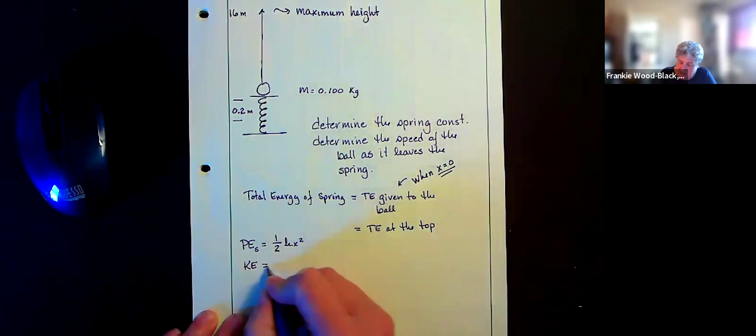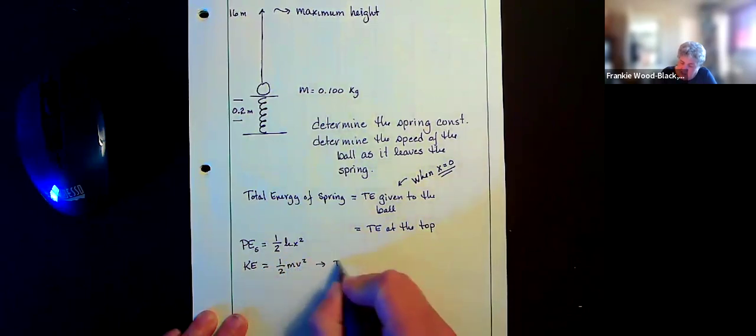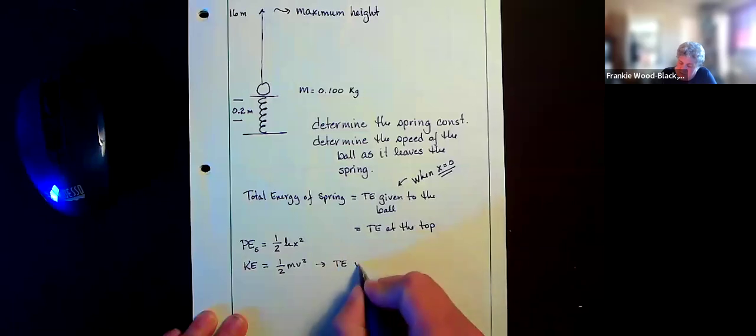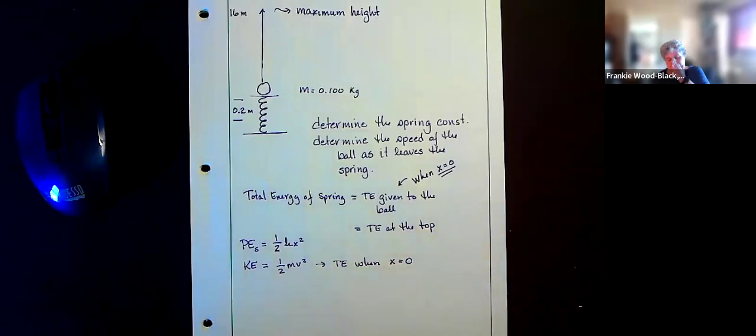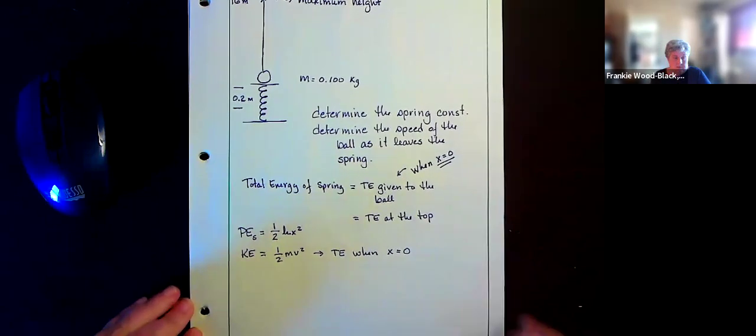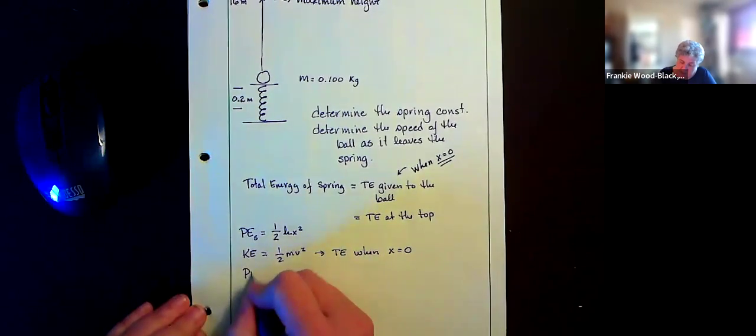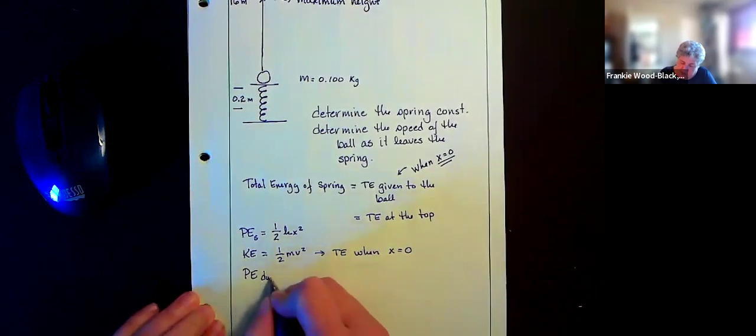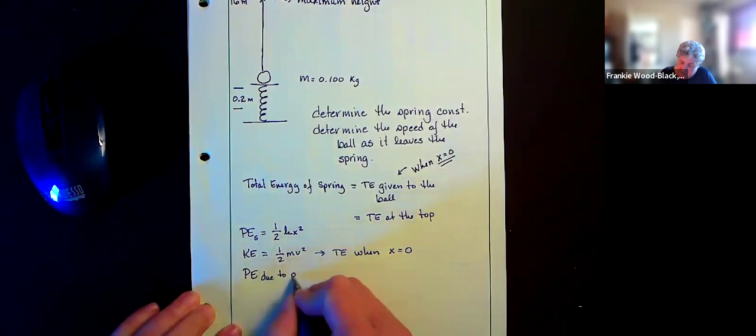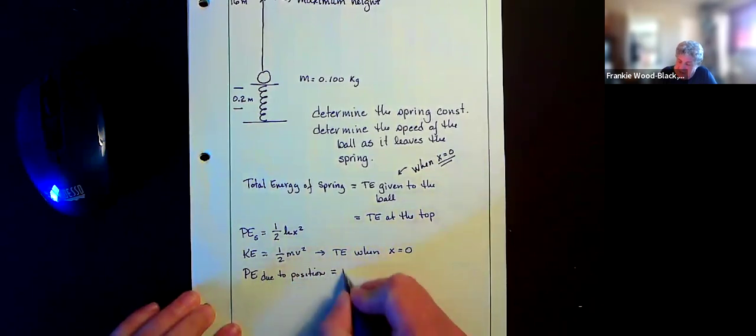and this is kinetic energy is one-half mv squared, and this is going to equal the total energy when our x is equal to zero. And we're going to have our potential energy due to position is equal to mgh.